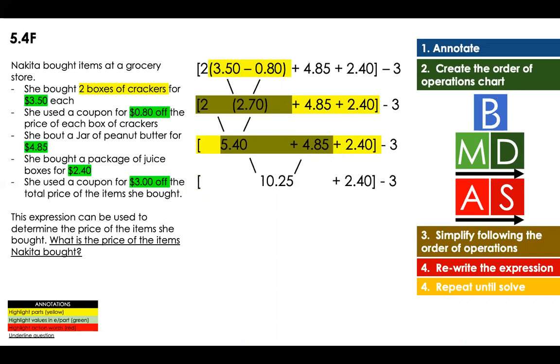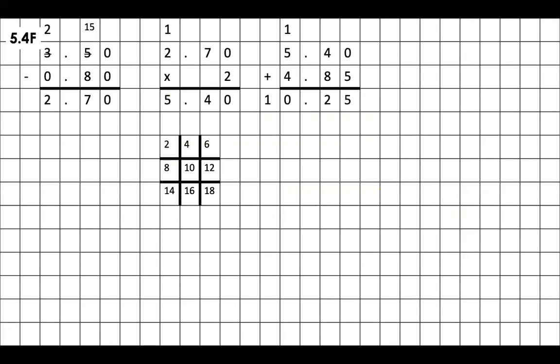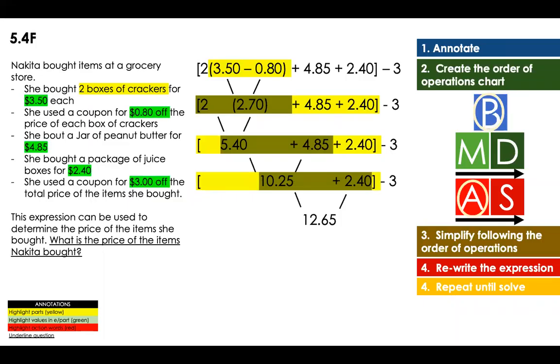Now I'm going to rewrite my expression again. Do you still have a bracket? Yes, I do. And I have one operation inside my bracket. Which operation is that? It's an addition. So now it's going to be 10.25 plus 2.40. I'm going to align them. Five plus zero, five, two plus four, six. Then it's going to be the decimal. Two plus zero, two. And then one plus zero, one. 12.65.